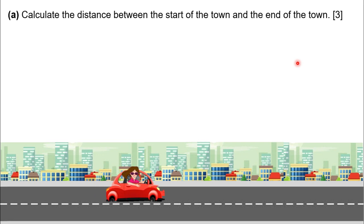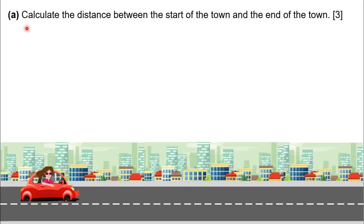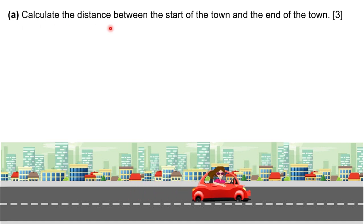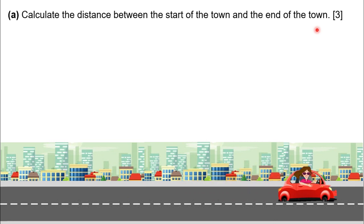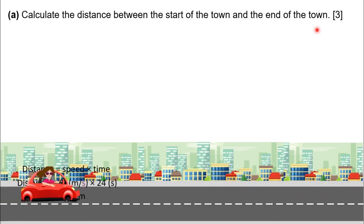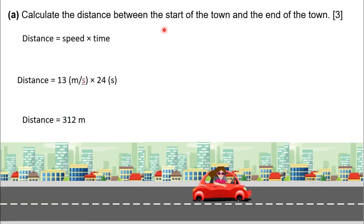Now, let's move into the first part of our question. Calculate the distance between the start of the town and the end of the town. Keep in mind, you have three marks for this part. We can do this in two methods. First, I'll do calculation by using equation.